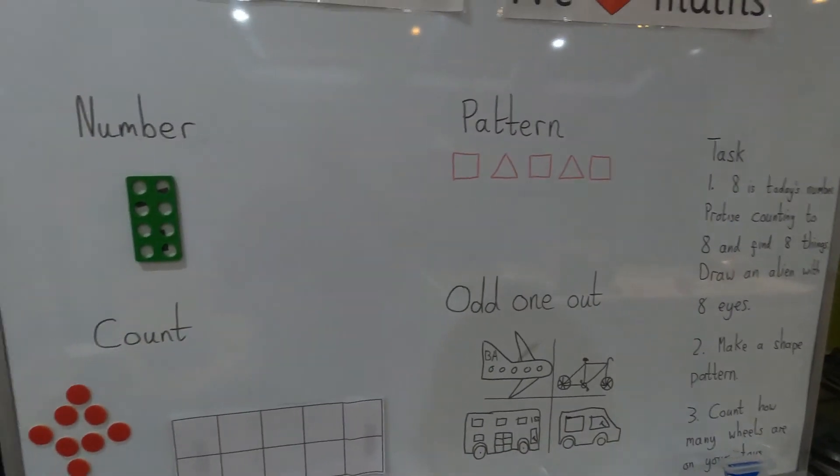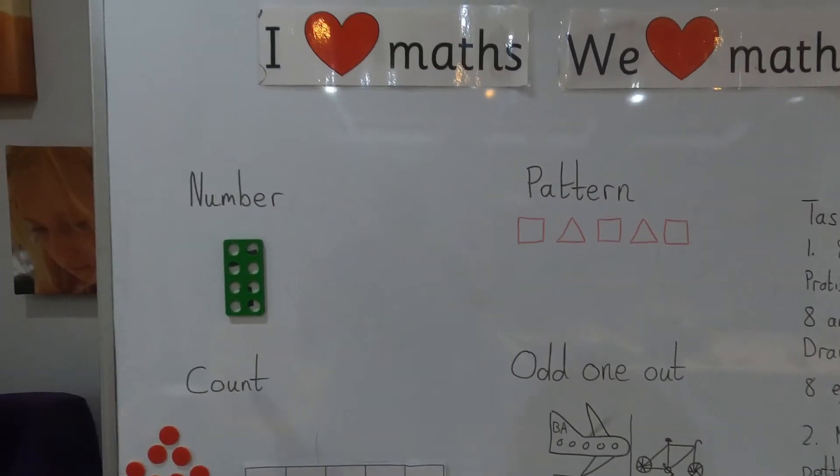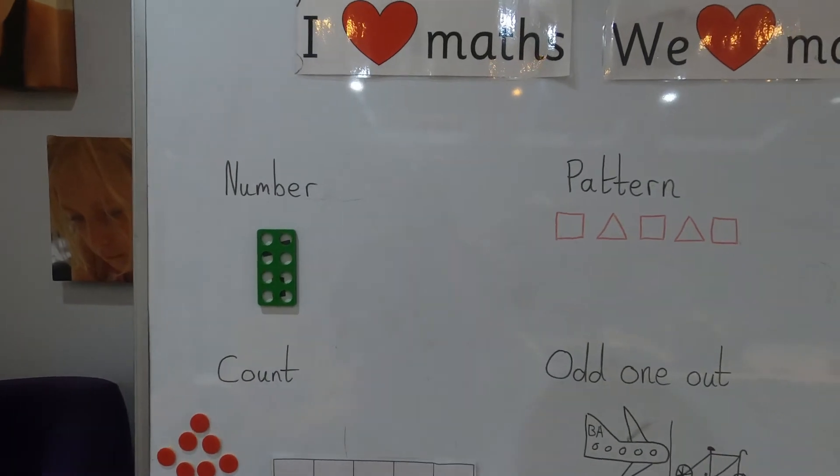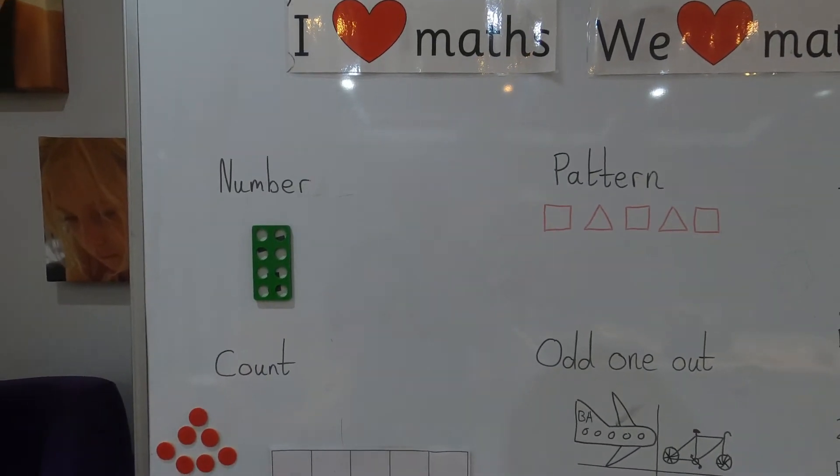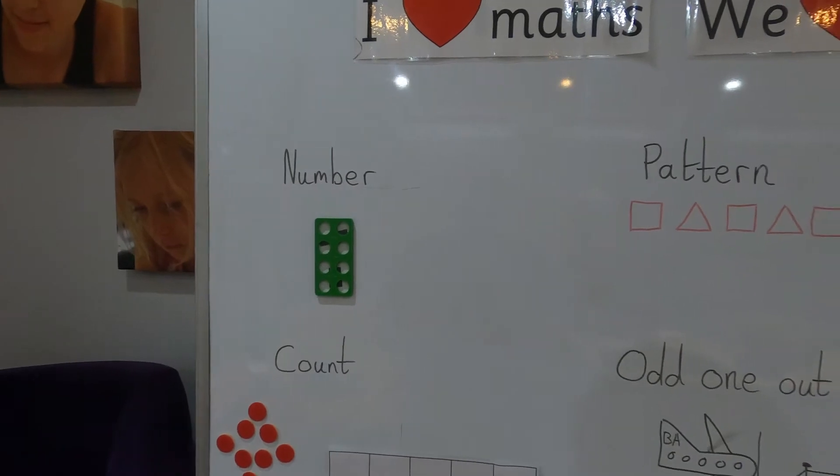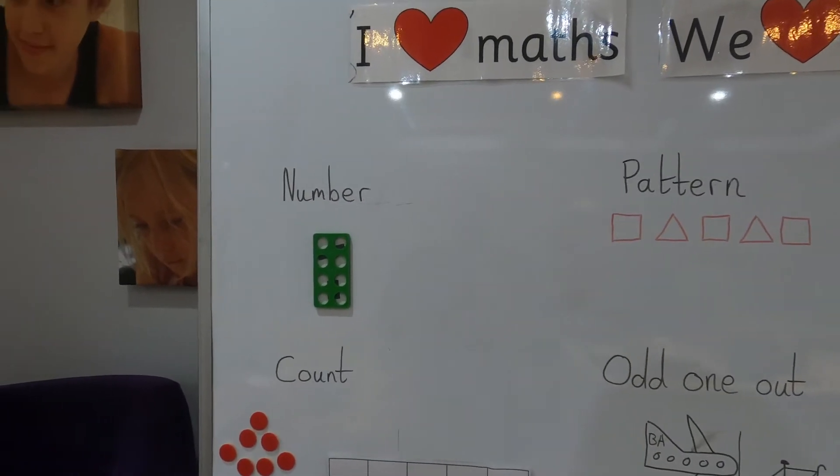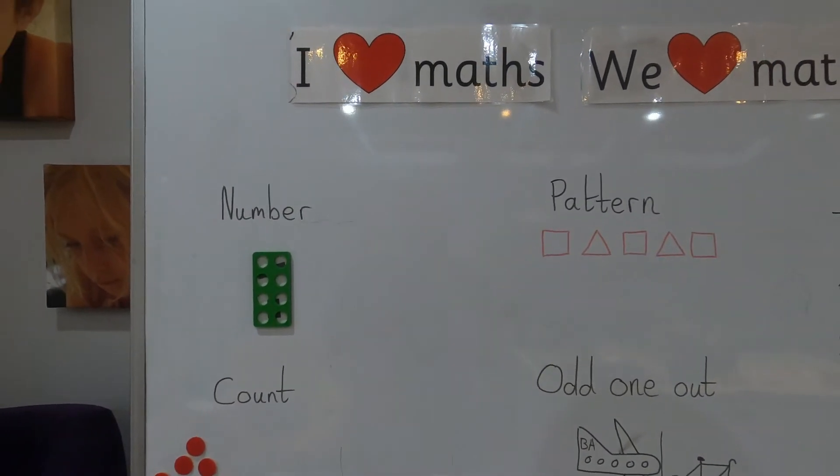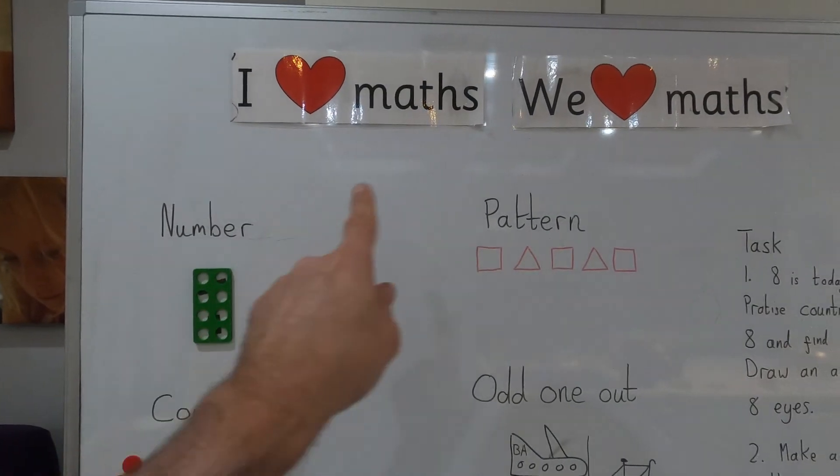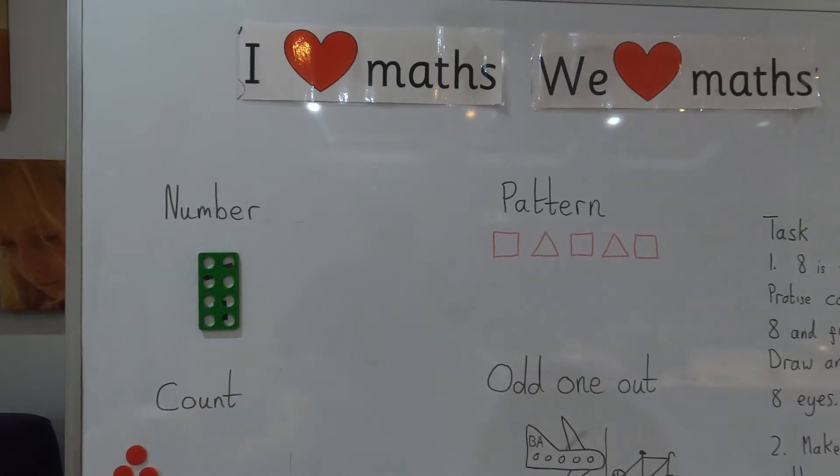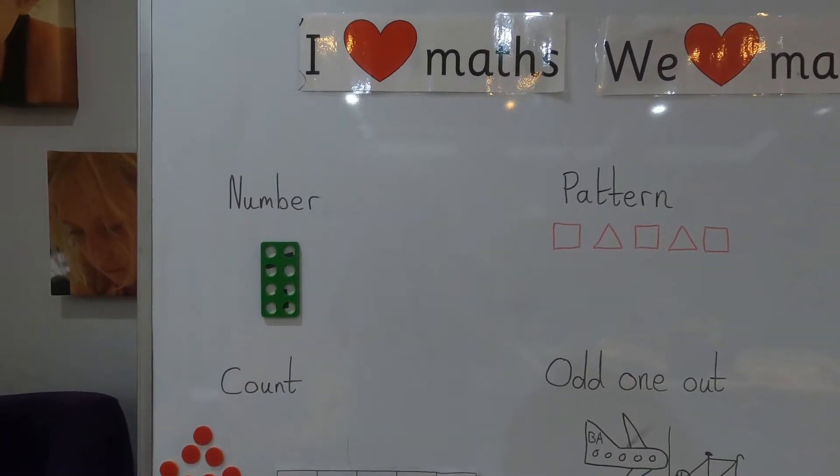Today we are going to do number, pattern, counting, and odd one out. You'll notice these are the same things as yesterday. We keep the same things every day for a week, then swap a couple of things out each week to keep it nice and fresh, while making sure you're learning and getting cleverer and cleverer.